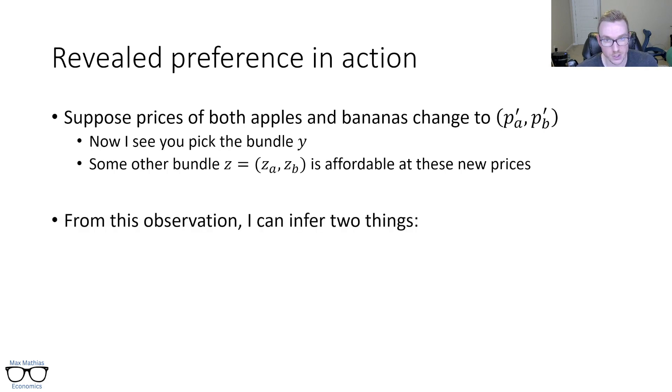So from this observation, I can now infer two things. First and pretty trivially, I know you like Y more than Z by the same reasoning on the last slide. You could have avoided Z, but I saw you pick Y. But using the information from the last observation, X is better than Z by transitivity. The reason why is that you picked X over Y, and then I saw you pick Y over Z. So using that transitivity preference assumption, we know that X is better than Z by transitivity.